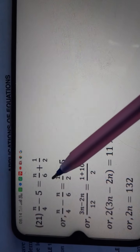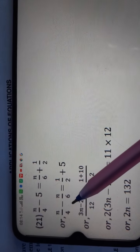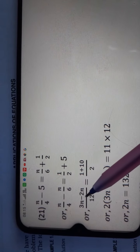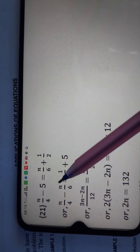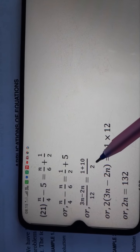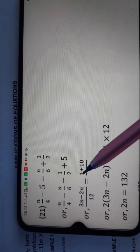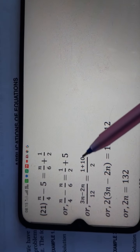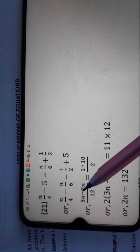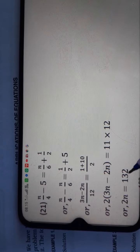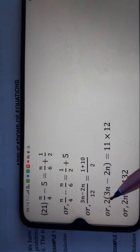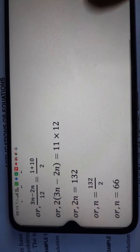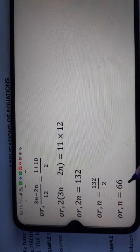Question number 21: n by 4 minus 5 is equal to n by 6 plus 1 by 2. After putting n terms on one side and constants on the other, we take LCM of 4 and 6, which is 12. We get 3n minus 2n upon 12 is equal to 11 upon 2. Cross multiplying: n times 2 gives 2n, and 11 times 12 is 132. Dividing 132 by 2 gives the final answer 66.